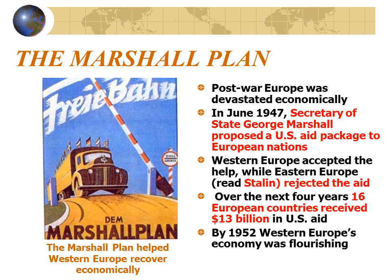One reason Stalin and Eastern Europe rejected U.S. aid was that by accepting money, the economies of those nations would become dependent on the United States economy in the long term. Countries like France, England, and Germany became satellite nations of the United States, just as Czechoslovakia, Yugoslavia, and Romania became satellite nations of the Soviet Union.